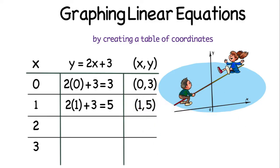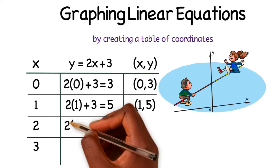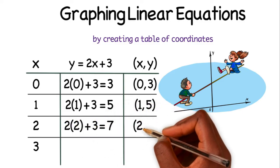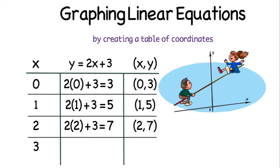This third x value I chose was 2. So now 2 times 2 is 4, and 4 plus 3 is 7, so 2 comma 7 will be the coordinate that I will be graphing next.